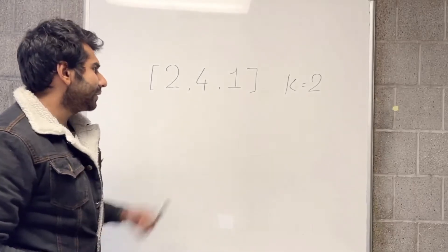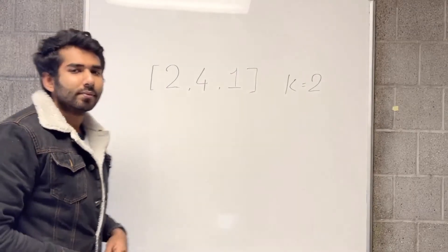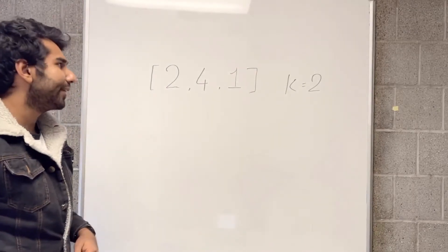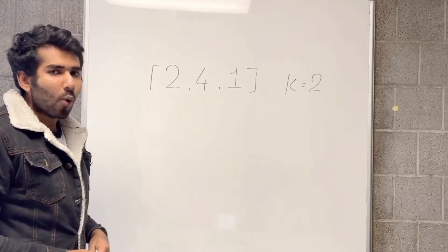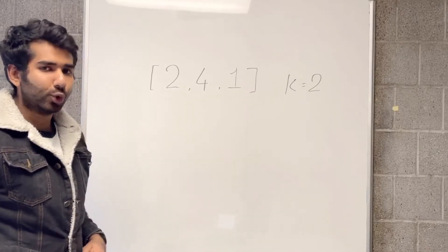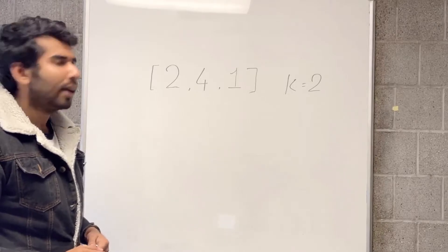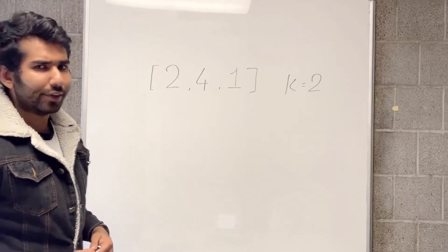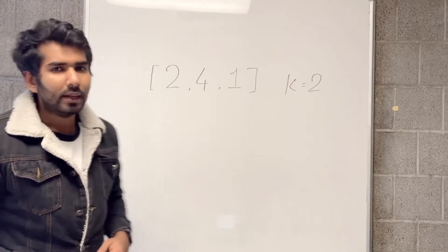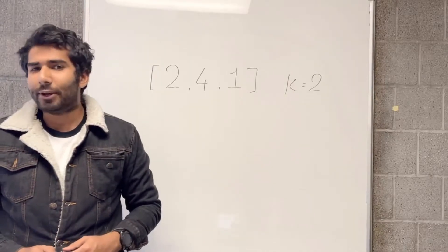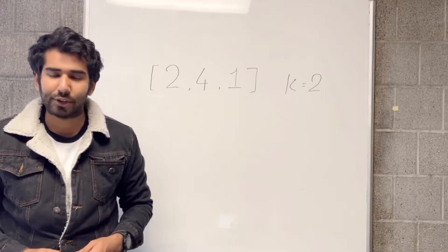Suppose we have these given stock prices and the value of k is 2. The first transaction should be clear — if we buy the stock at 2 and sell it at 4, we get a profit of 2. That was our first transaction. Can we do any more transactions here? No. So even if we do not complete all k transactions, we might still achieve the maximum profit.